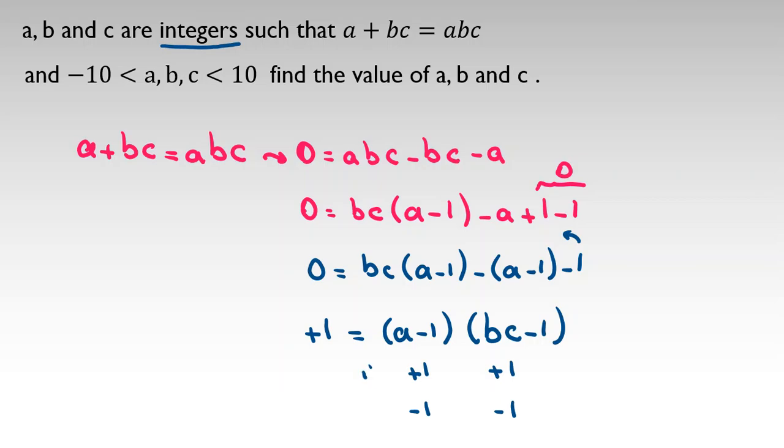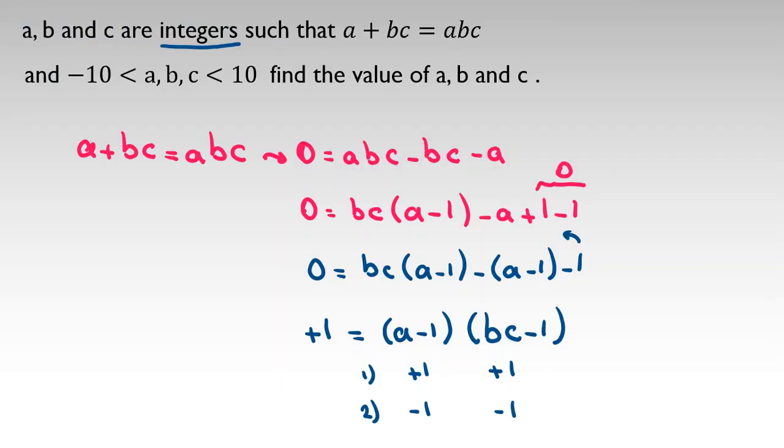Case 1 is: a - 1 = 1 and also bc - 1 = 1. From here a = 2, from this part bc = 2.